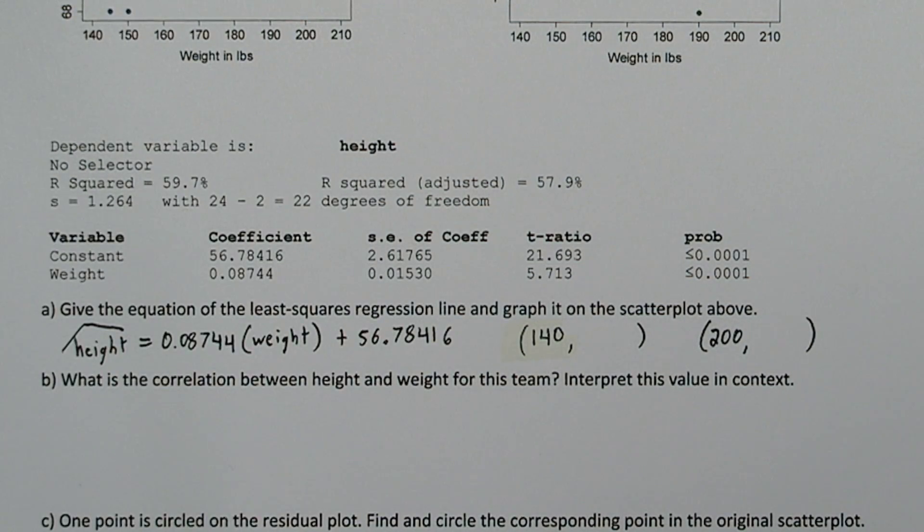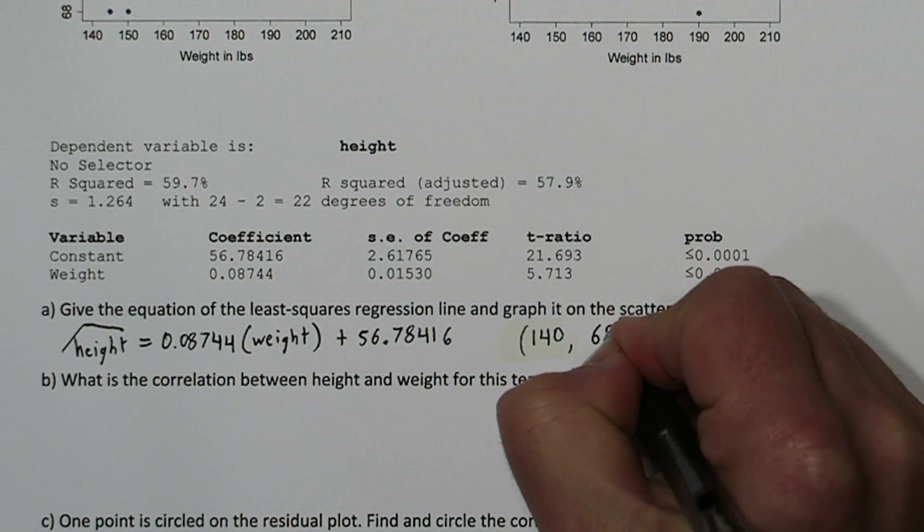So when we multiply 140 times this slope, and then we add our y-intercept, we end up getting a value of about 69.